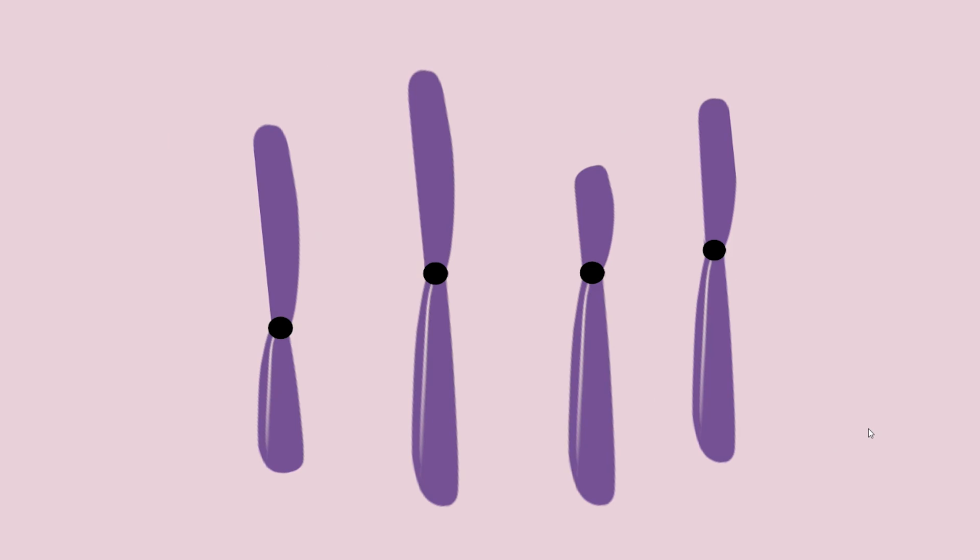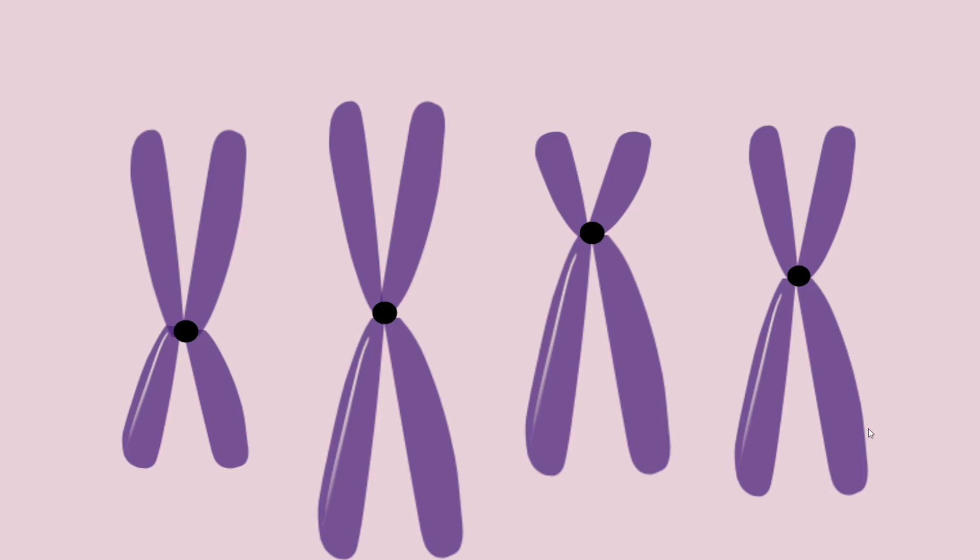The number of centromeres is what defines the number of chromosomes. In this image, there are four centromeres, so there are four chromosomes. Sometimes you will see chromosomes drawn like this. These chromosomes have two DNA molecules each, and they each only have one centromere, meaning these are still four chromosomes.